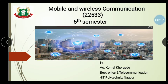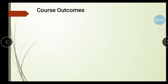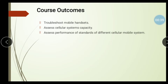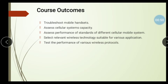From today, we are going to start our subject. Before starting the chapter, we must understand the course outcomes. The course outcomes are: Troubleshoot Mobile Handset, Assess Cellular System Capacity, Assess Performance of Different Cellular Mobile Systems, Select Relevant Wireless Technology Suitable for Various Applications, and Test the Performance of Various Wireless Protocols.